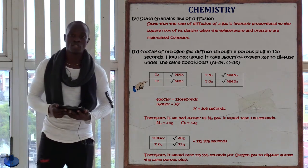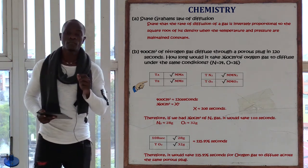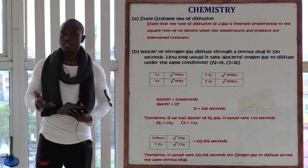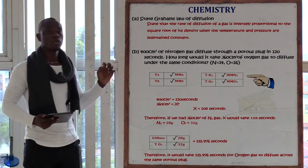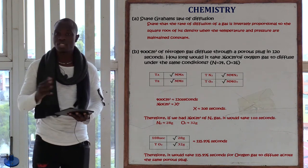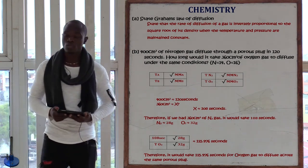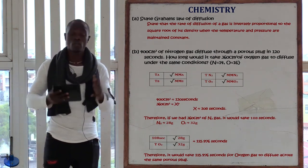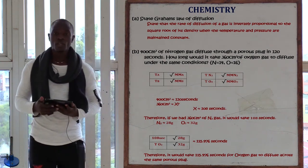The formula for time states: the time of the first gas divided by the time of the second gas equals the square root of the molecular mass of the first gas divided by the square root of the molecular mass of the second gas. Here the first gas is nitrogen and the second gas is oxygen. We have been given that nitrogen's time is 120 seconds for 400 cm³, and oxygen is 360 cm³ but its time is unknown.